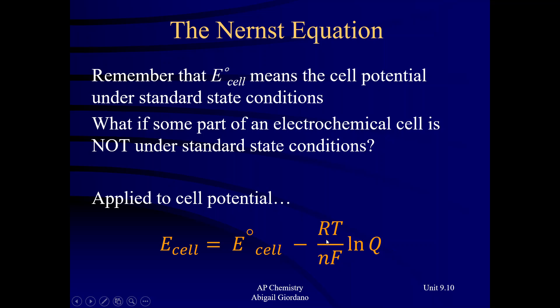Let's talk about the variables. Capital R is the gas constant — you need to use 8.314. T is temperature in Kelvin. Lowercase n is the number of electrons transferred in the galvanic cell — that's the number that was canceled out when you added your two half reactions together. F is Faraday's constant, given on your formula sheet.